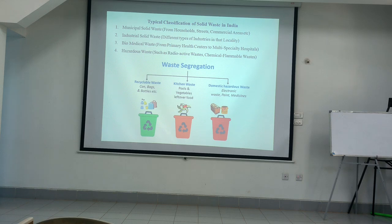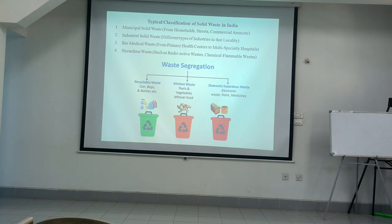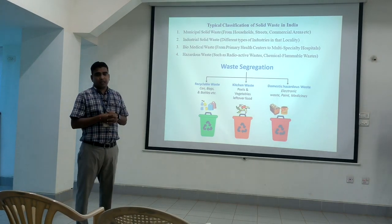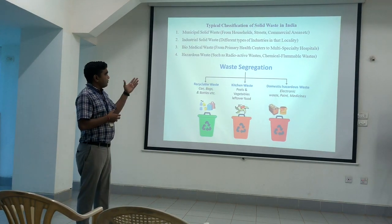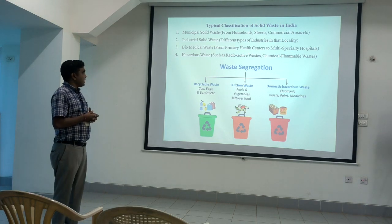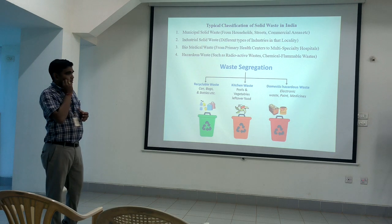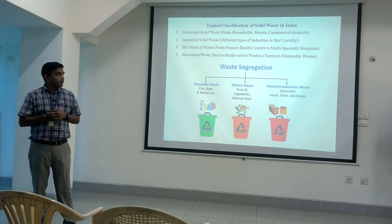The classification of solid waste — called garbage — includes municipal solid waste from households, streets, and commercial areas. Second is industrial solid waste, which depends on the type of industries in that locality — some towns will have zero industrial waste. Third is biomedical waste generated from hospitals and primary health centers to multi-specialty hospitals. Fourth is hazardous waste such as radioactive, chemical, and flammable waste.